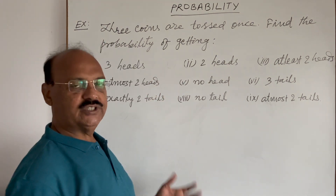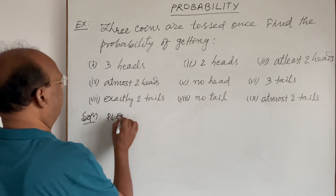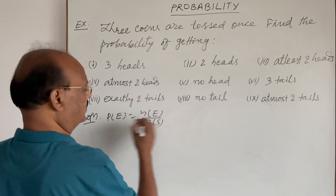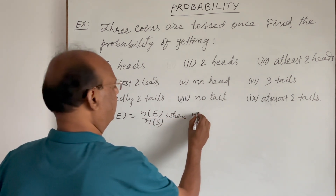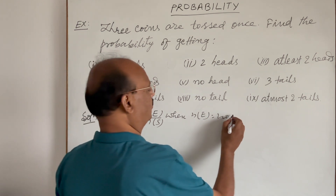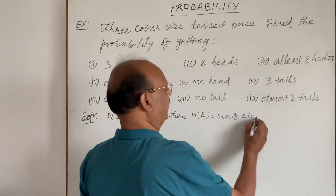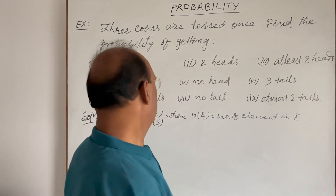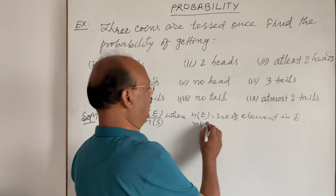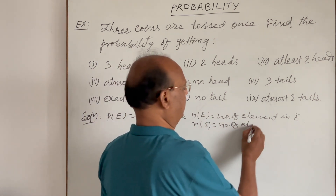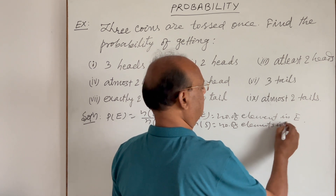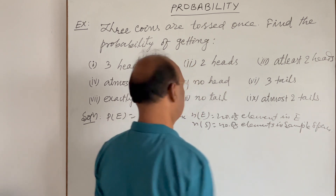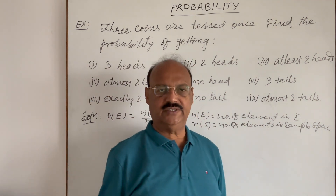Here we will use the formula: probability of any event P(E) is equal to n(E) divided by n(S), where n(E) means number of elements in E — E is the favorable event — and n(S) means number of elements in the sample space.